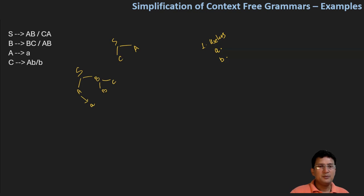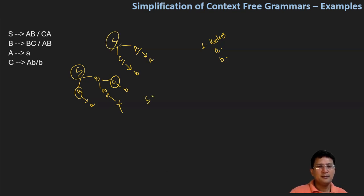First of all, B produces BC. You can see that C is the terminal symbol. So C is a valid terminal symbol. If we work on this — S produces CA, C produces A, B, and A produces small 'a'. This means S is a valid symbol, A is a valid symbol, and C is a valid symbol. B will not resolve to a terminal symbol — B is a useless symbol.